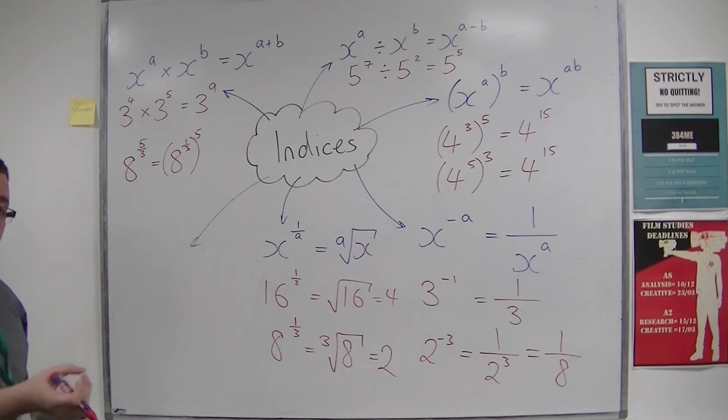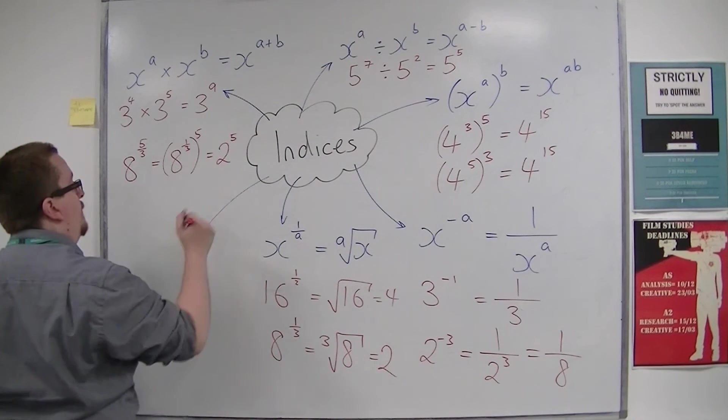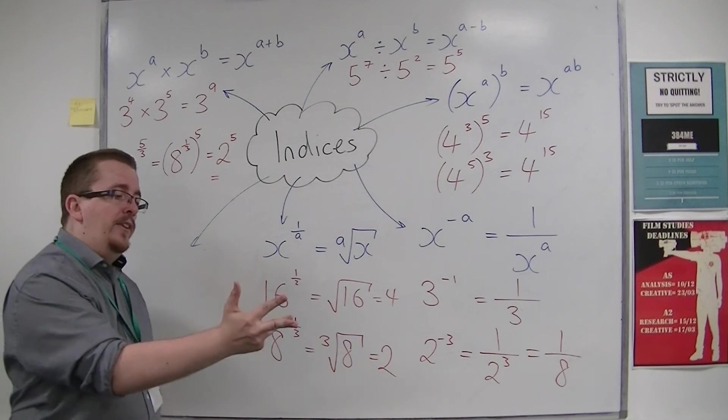Now 8 to the power of a third is the cube root of 8, so that's 2 to the power of 5. Now 2 to the power of 5: 2, 4, 8, 16, 32.